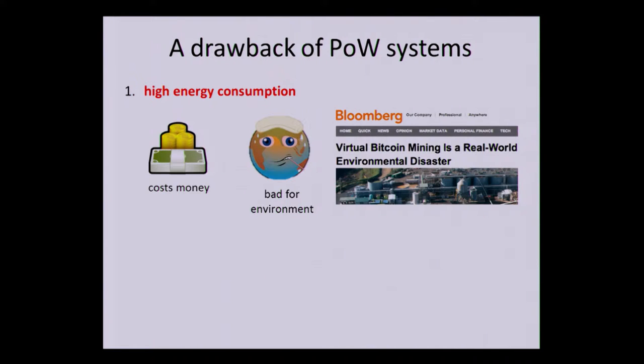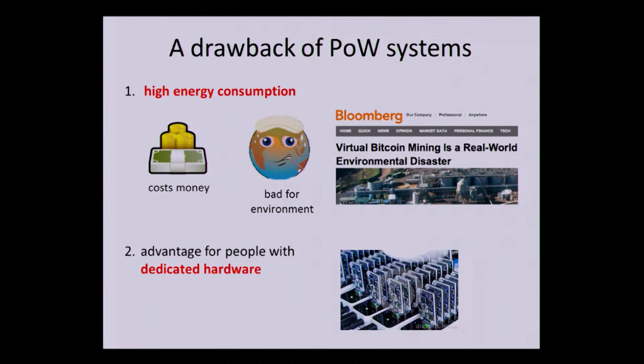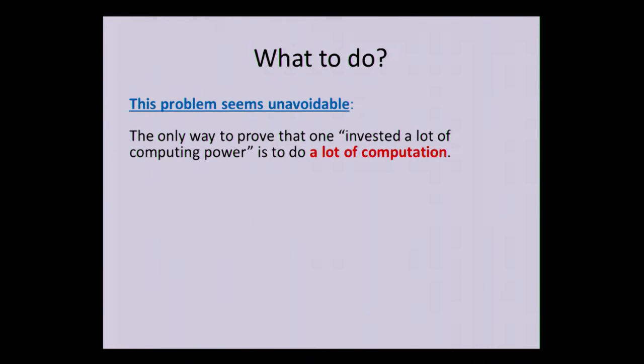So what is the drawback of this proof-of-work? Well, one is high energy consumption. It's visible in Bitcoin, and some people even call Bitcoin an environmental disaster because using proof-of-work consumes energy, and it costs money. In Bitcoin, the problem is that it gives advantage to people with dedicated hardware. It's much faster to solve proof-of-work if you do it on hardware, if you do it on ASICs. That's why everybody's mining on hardware now. The problem seems to be somewhat unavoidable because to prove that you invested a lot of computing power, you need to do this computation. So that's the only way you prove that you do work, you actually do this work. And the question is, is there any other resource you could use?